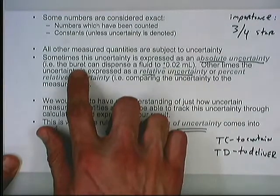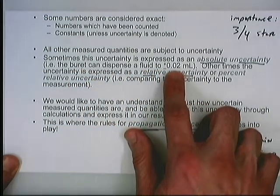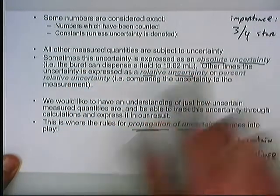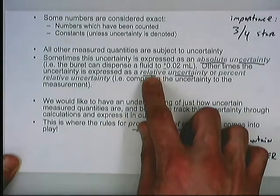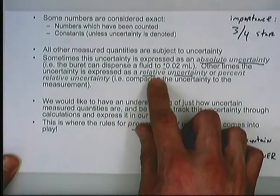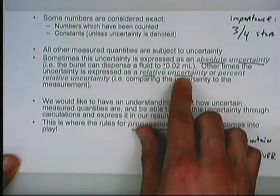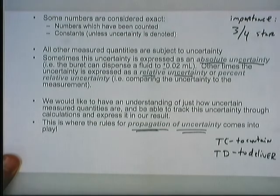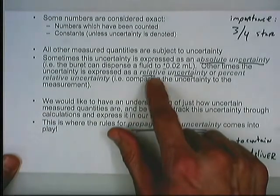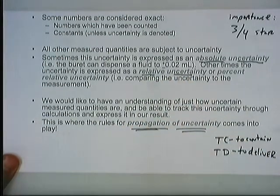The absolute uncertainty specifies the tolerance of the measurement device. For instance, a burette might dispense fluid to plus or minus 0.02 milliliters—that's an absolute uncertainty. On other occasions you might encounter a relative uncertainty or a percent relative uncertainty, where the uncertainty of the measurement is ratioed back to the value being measured.